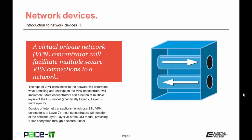We're going to begin by talking about the VPN concentrator. A virtual private network concentrator, or VPN concentrator, will facilitate multiple secure VPN connections to a network. The type of incoming VPN connection will determine what tunneling and encryption the VPN concentrator will implement. Most concentrators can function at multiple layers of the OSI model, specifically at layers 2, 3, and 7. Outside of an internet transaction, most concentrators will function at the network layer, or layer 3 of the OSI model, providing IPSec encryption through a secure tunnel.